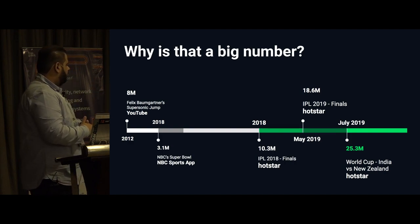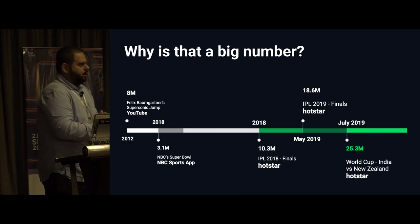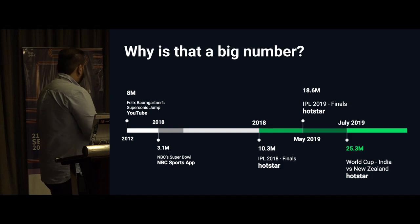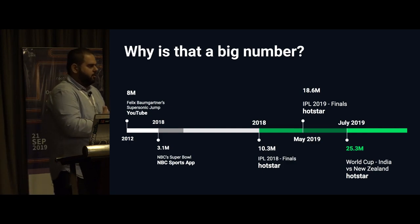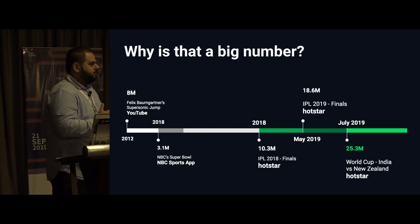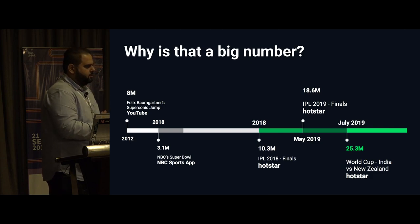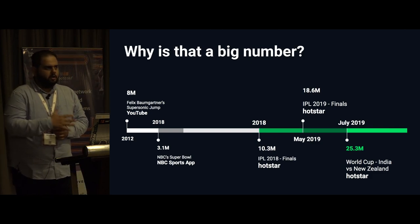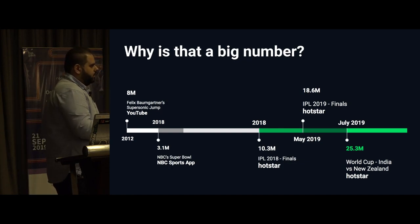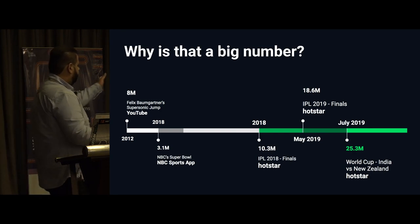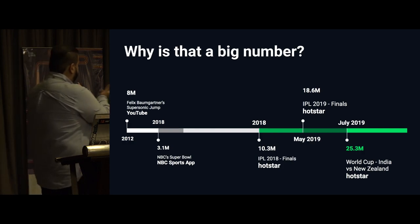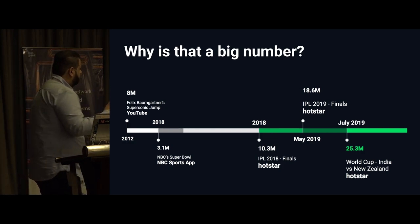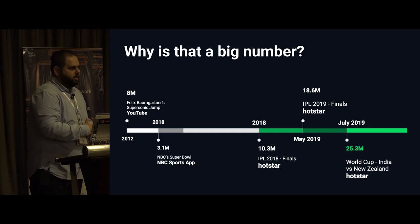Before we created a record last year of 10.3, the global concurrency record was with YouTube — a Red Bull supersonic freefall event done in Australia — around 8 million people watching, in 2012. From 2012 to 2018 no big event broke that record — Super Bowl, royal wedding, Donald Trump inauguration was around 4 million — until IPL 2018 happened. From IPL onwards the concurrency has just been going up, and if you compare to the nearest competitor it is almost 3x of what they usually do.